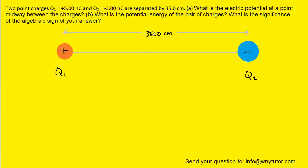So here are those two charges that are separated by 35 centimeters, and in part A we are asked to calculate the electric potential at a point that's midway between them. So why don't we just put a little dot here to indicate the point that we're interested in.